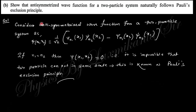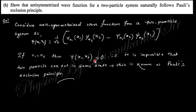The anti-symmetric wave function of two particles naturally leads to the Pauli exclusion principle. The anti-symmetric wave function is written as a determinant; if n₁ = n₂ (both particles in same state), this becomes zero, which is impossible. Therefore, no two particles can occupy the same quantum state — this is the Pauli exclusion principle.